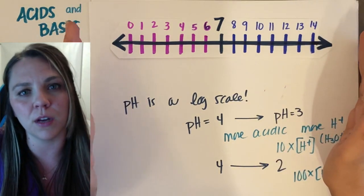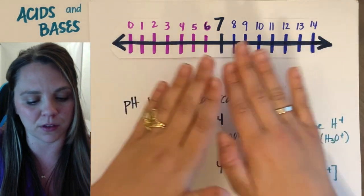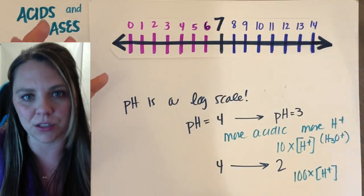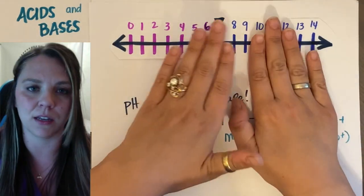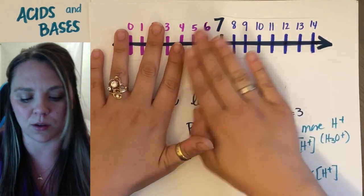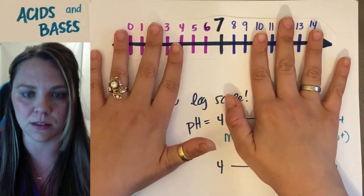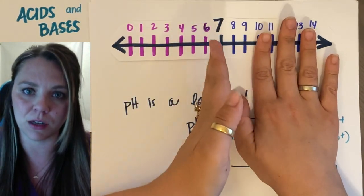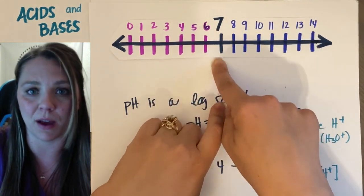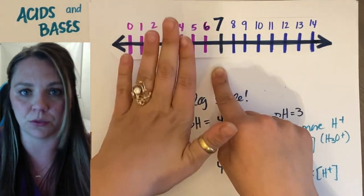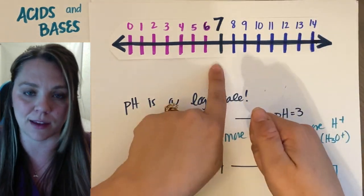Okay. So those are the two big key pieces to understand for the concept of a pH scale. pH scale, again, tells us how acidic or how basic a solution is. At seven in the middle is neutral. So that means I have an even amount. I have an equal amount of hydronium from my acid and hydroxide from my base when I'm at seven.